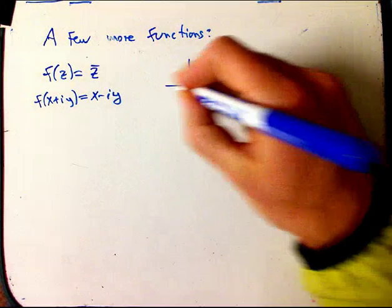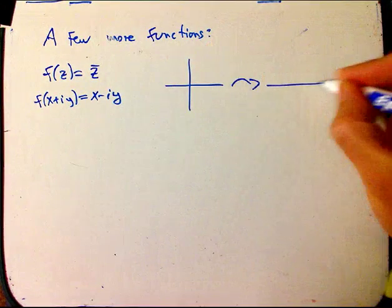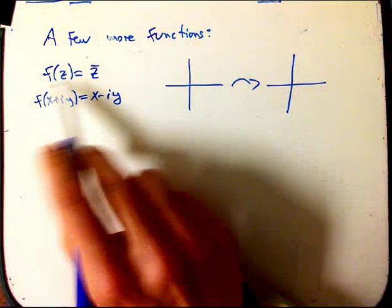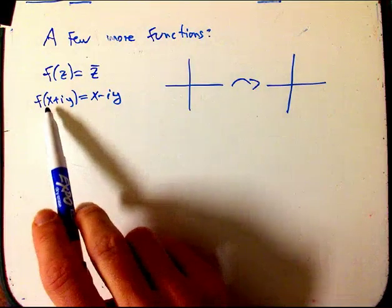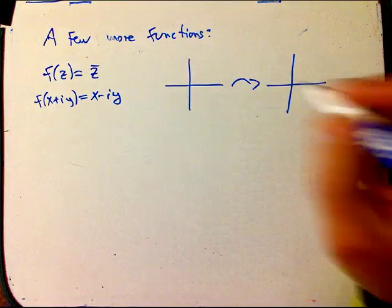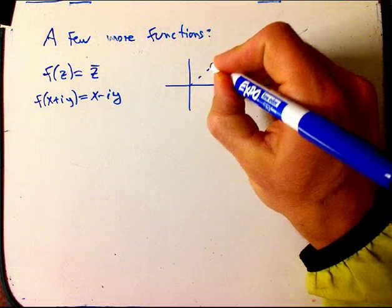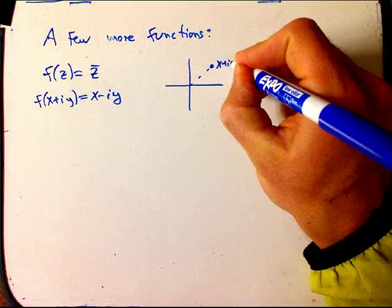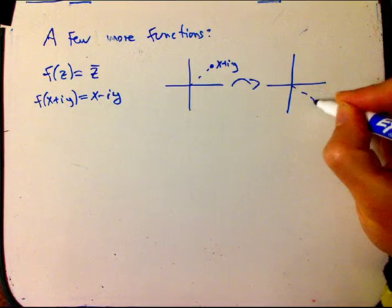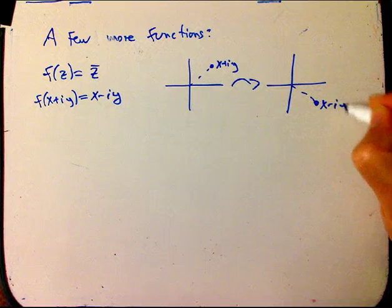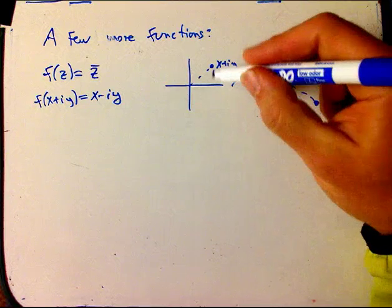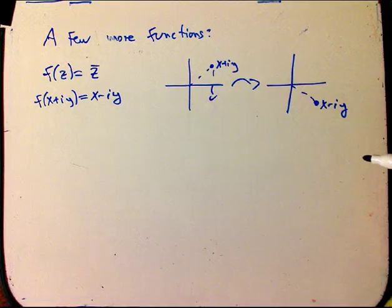So one of the most important ones is complex conjugation. Take z to z bar, and the definition is x plus iy goes to x minus iy, where x and y are real. So that just flips x plus iy, say up here, to x minus iy down here. So it just flips it across the x-axis, there's reflection across the x-axis.